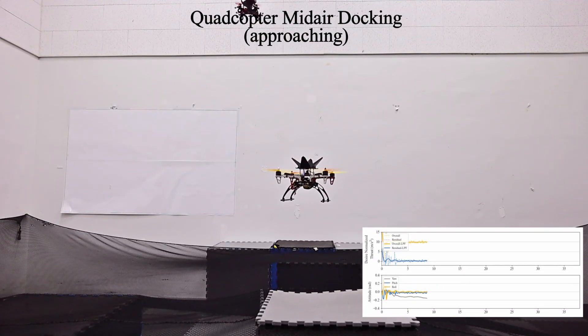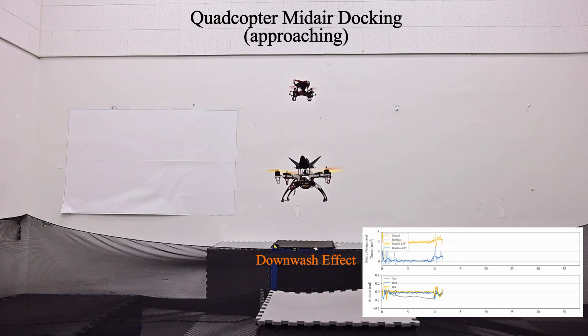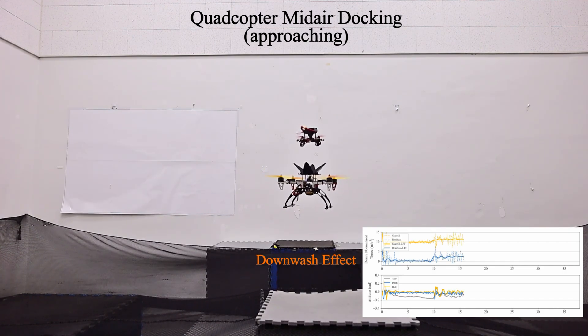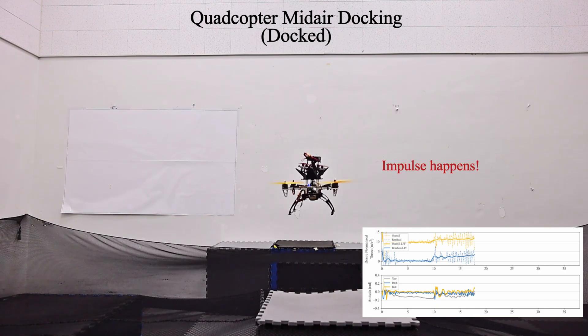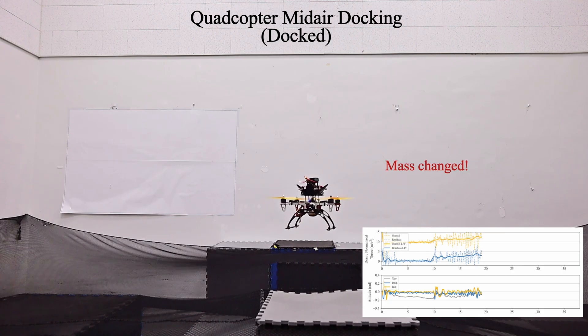In quadcopter mid-air docking, when small quadcopter approaches the large one, the residual model will generate an increasing positive thrust command to compensate for the downward force. The small quadcopter falls freely and gives an impulse to the large one.